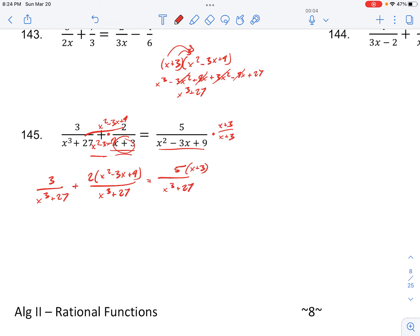And now combining the numerators here, we get 3 plus, expanding this 2, 2x squared minus 6x plus 18 over x cubed plus 27 is equal to, after distributing this 5 in, so we have 5x plus 15 over x cubed plus 27.